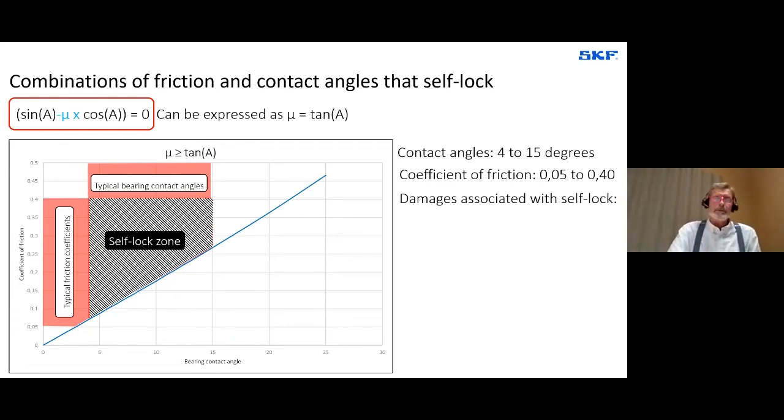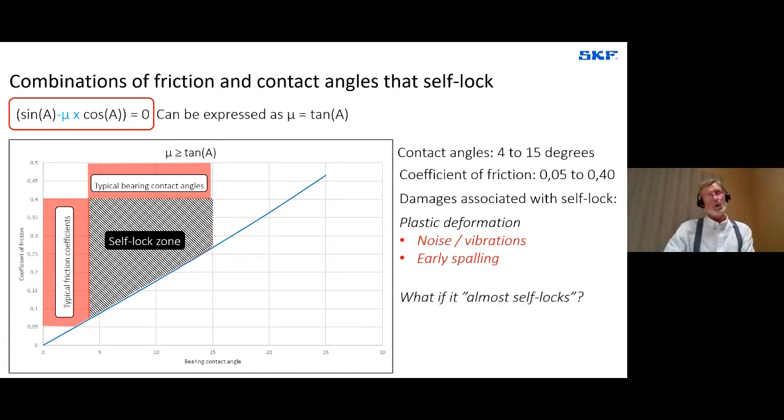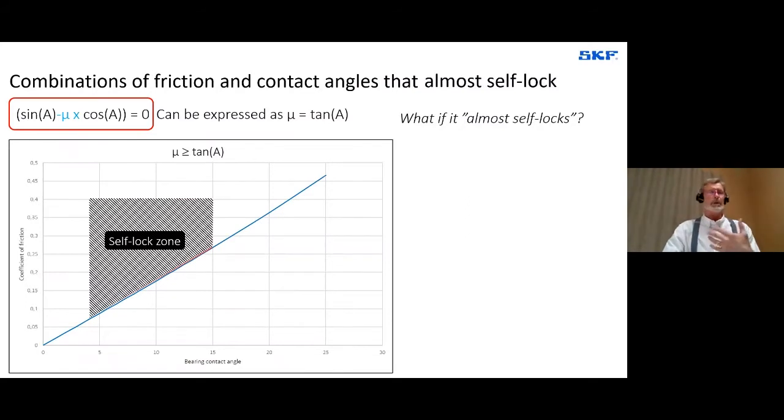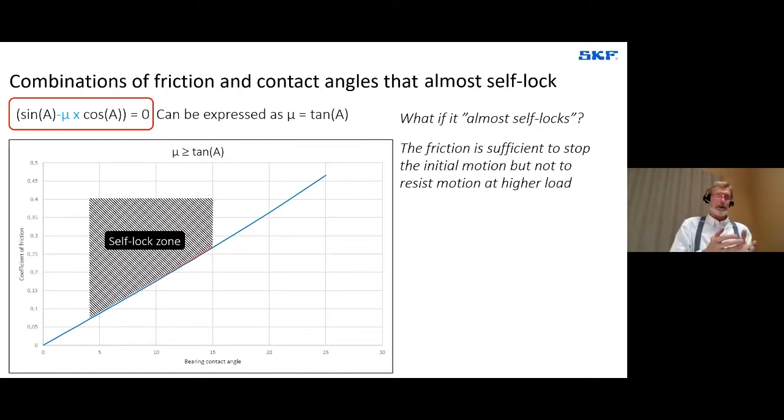And what would be the damages associated with that? We saw earlier that the self-lock causes very large rolling element loads. So plastic deformation could occur. And if it occurs, we will, depending on the speed, but we would certainly notice vibrations or even noise. We could also notice very early spalling, premature things. Now, what if the bearing almost self-locks?